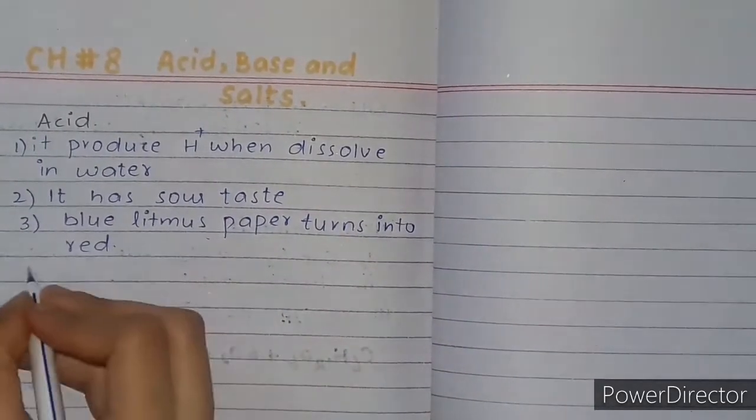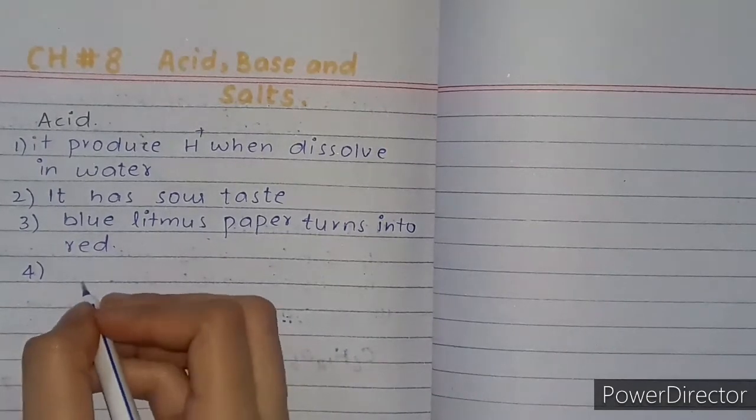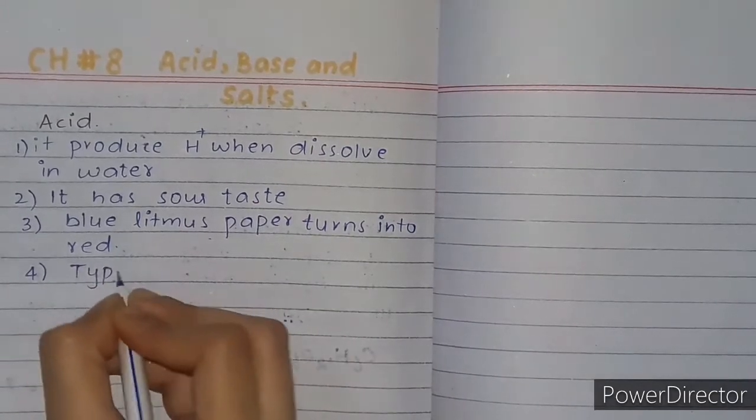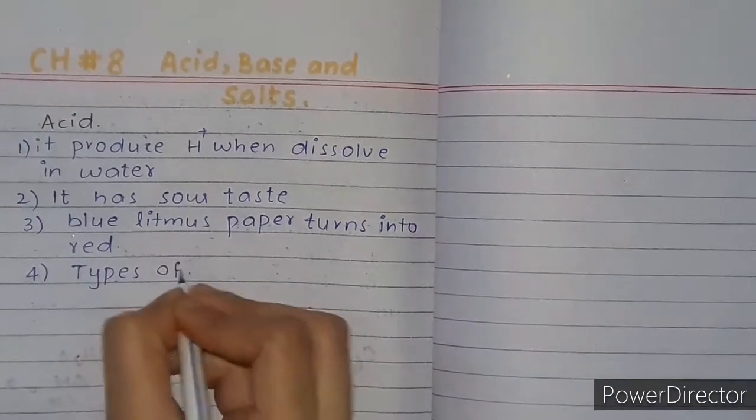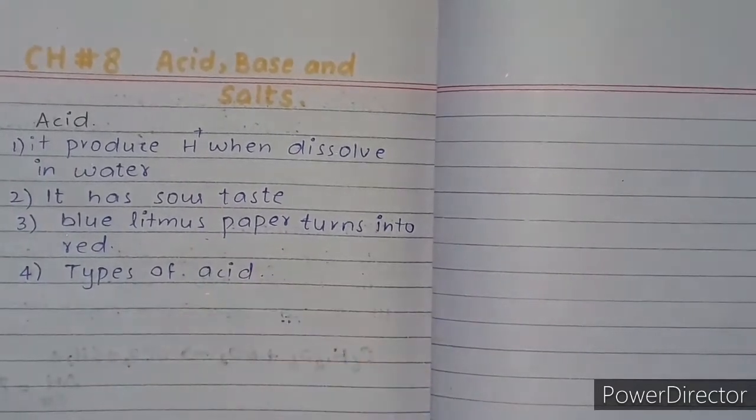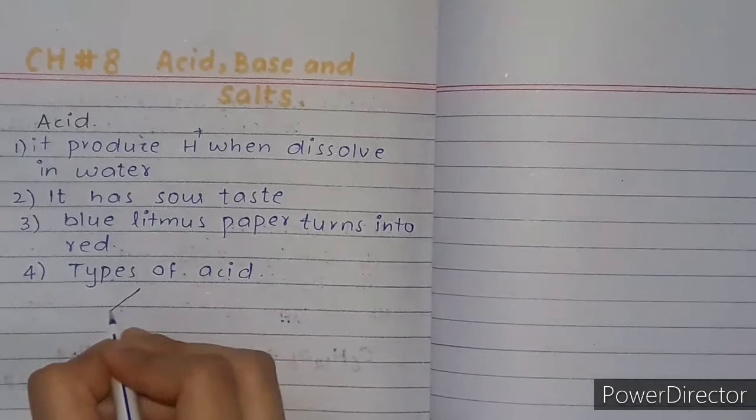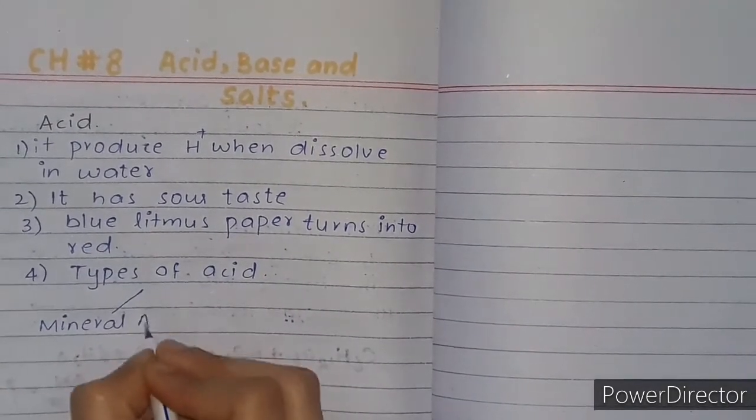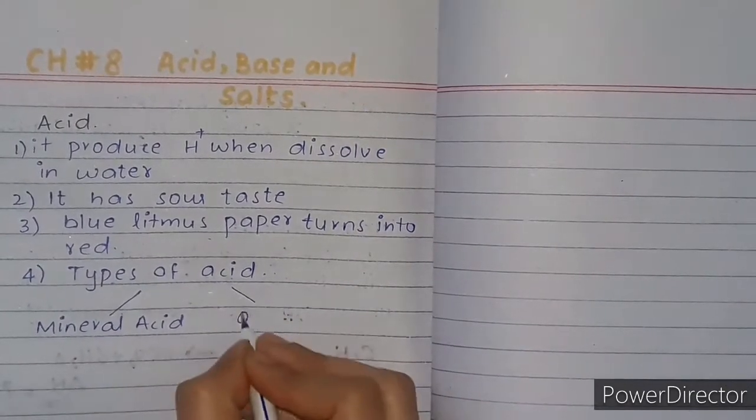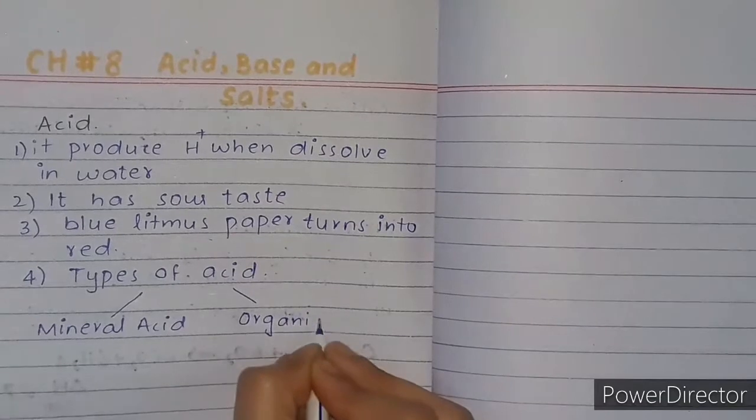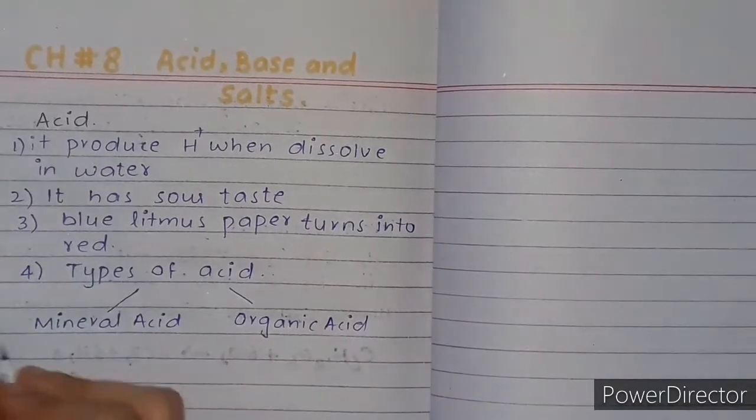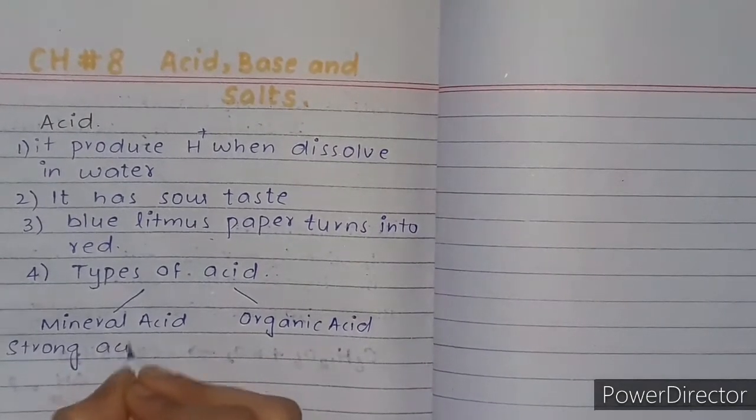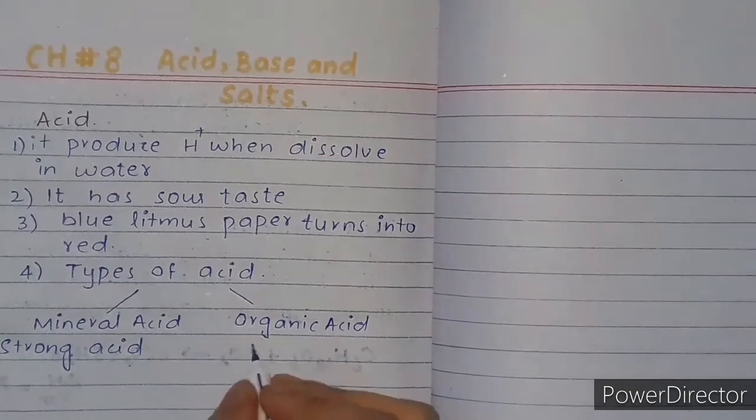Fourth property is types of acid. Acid has two types. One type is mineral acid and the second type is organic acid. Mineral acid is strong acid and organic acid is weak acid.